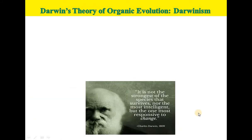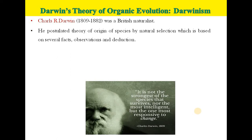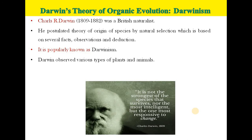The second theory is Darwin's theory of organic evolution, also called Darwinism. This theory was developed by Charles Darwin, a British naturalist. He postulated the theory of origin of species by natural selection, which is based on several facts, observations and studies — popularly known as Darwinism. Darwin observed various types of plants and animals.